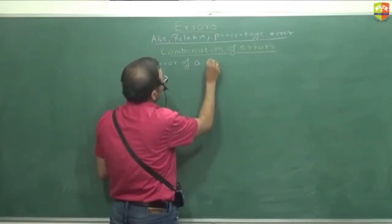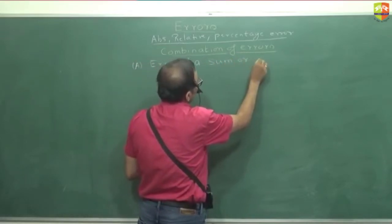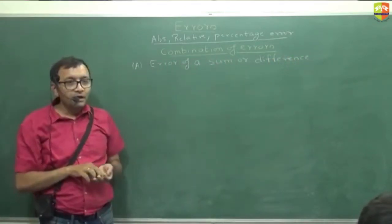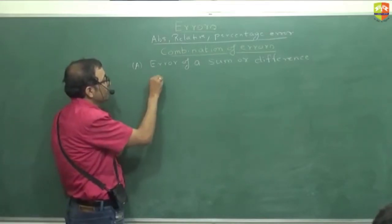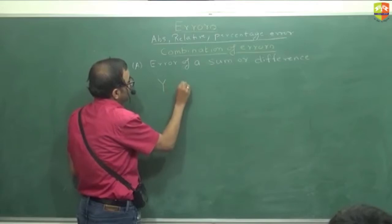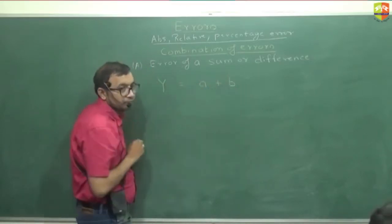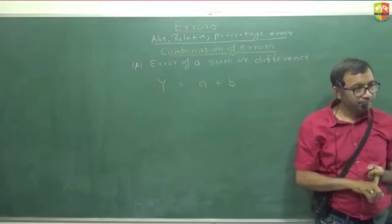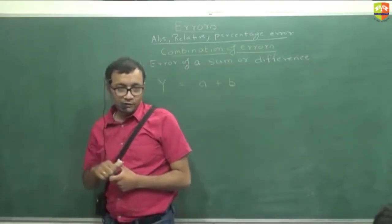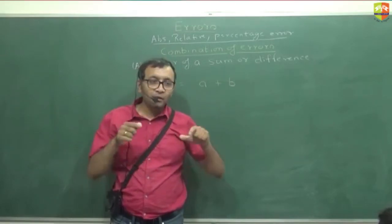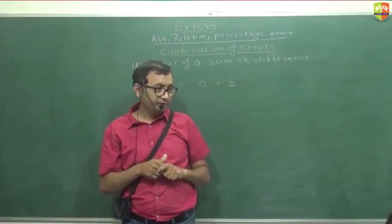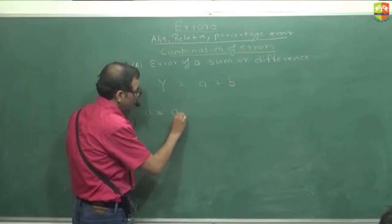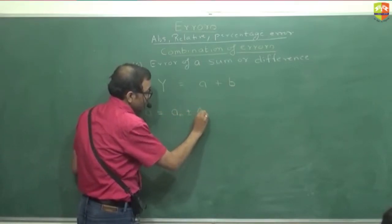Error of a sum or difference. Suppose you have an expression like Y = a + b. You are measuring a, so there will be error in a. You are measuring b, so there will be error in b also. What is the error in Y? When you measure a, you write: a = a_mean ± Δa_mean. You don't have to write mod Δa_mean — plus-minus takes care of it. Similarly, b = b_mean ± Δb_mean.